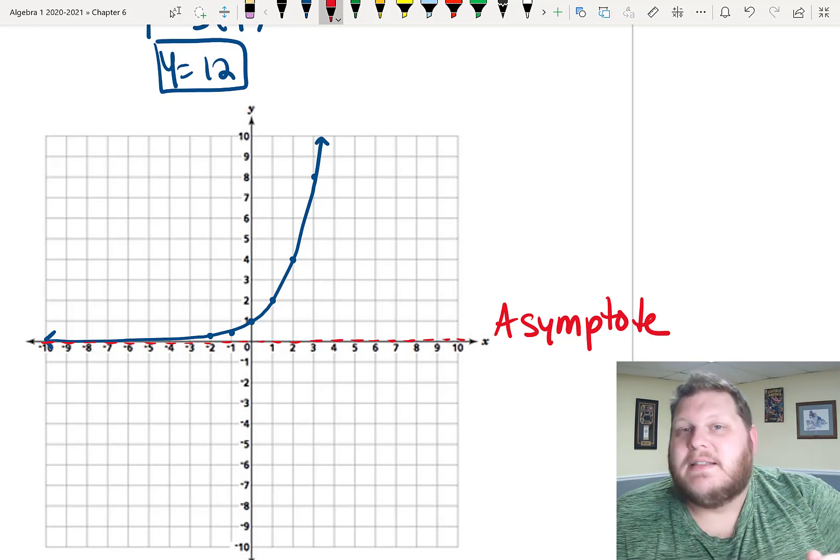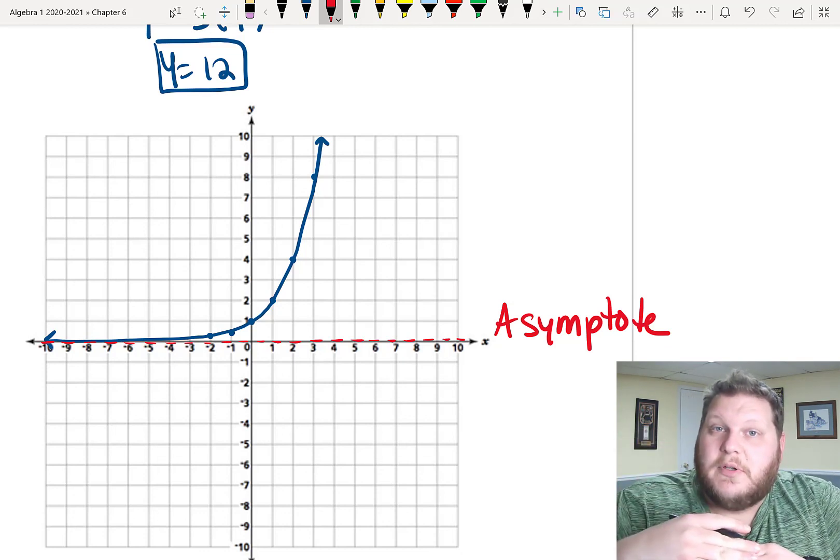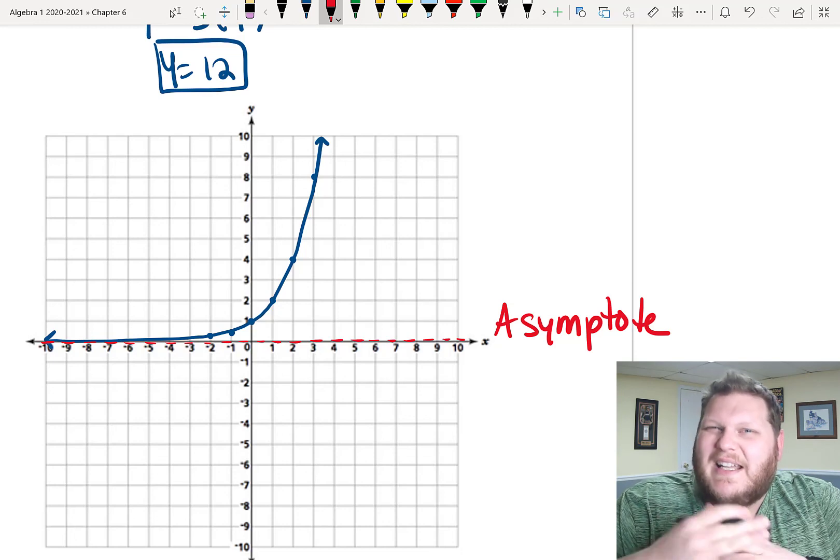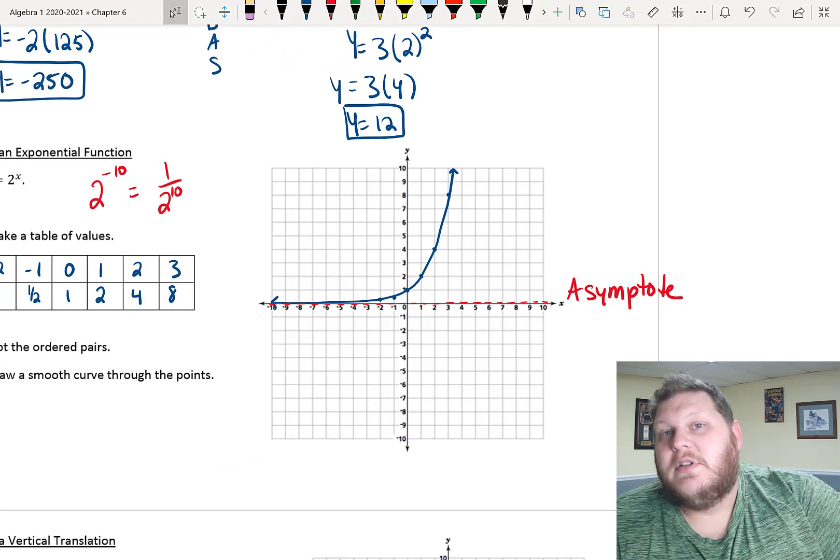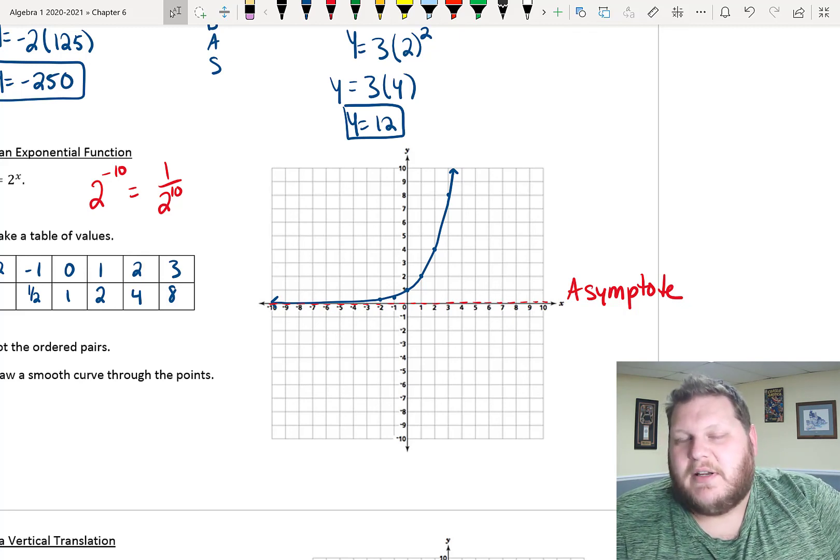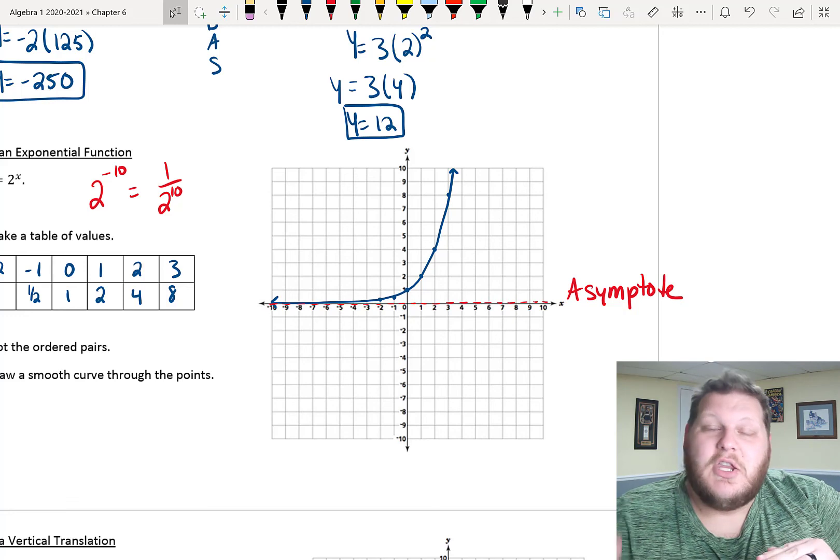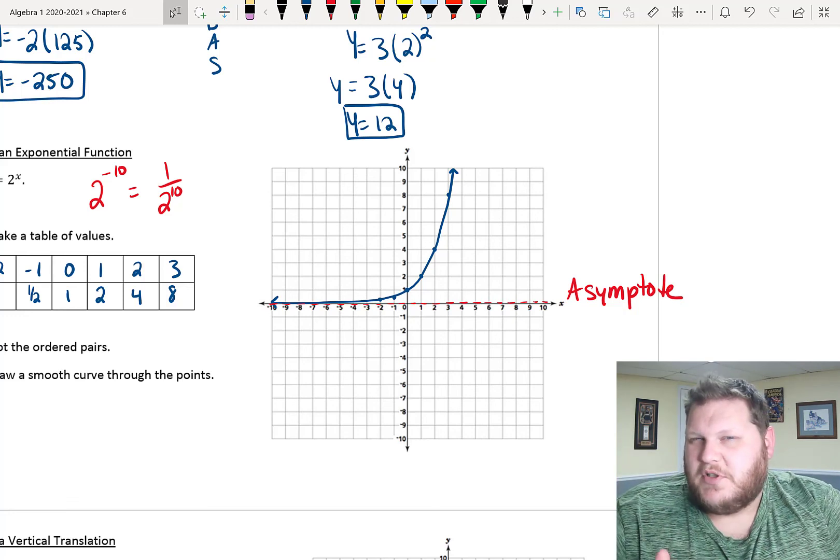So, an asymptote is a point or a value in my graph that my function gets really, really close to, but never actually hits. It's kind of like a force field. But as we move forward in the next set of notes for 6.3, we'll get more specific into identifying where that happens first and using that to be able to graph my curve with fewer number of points, which would be nice.